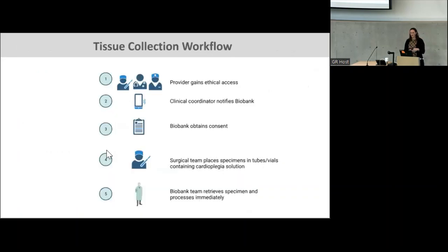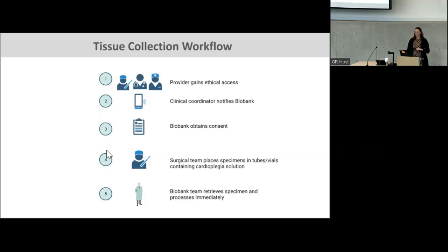For tissue collection, the one step we need the provider to do after we've set up the study is that the provider has to gain ethical access — which just means someone in the provider's staff, could be a vet coordinator or nurse, just asks the patient: would you be willing to talk to the biobank team? That's all they need to do. Once they say yes, that triggers the bat phone, and then our biobank takes care of everything else. We do all the consenting, all the biobanking, and then we have the samples ready for the investigator. We have super detailed SOPs to make this happen.